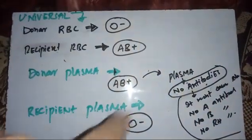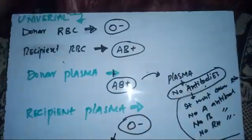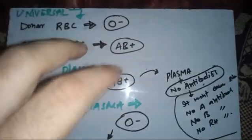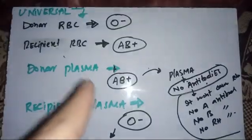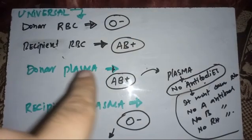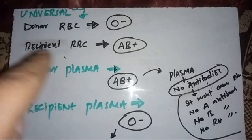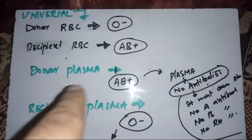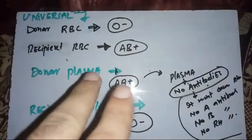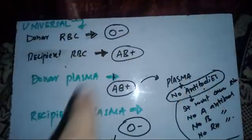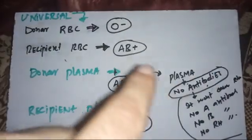Now for plasma: forget about the RBC portion — we are talking about the plasma portion. Blood has two portions: the cellular RBC portion and the plasma portion. When you donate plasma, you are actually introducing the antibodies — anti-A and anti-B antibodies — and those antibodies act as antigens to the recipient's blood group. So for the donor plasma, we need a blood group which has no antibodies, because those antibodies will act as antigens for the recipient.